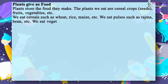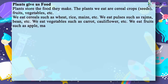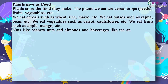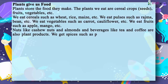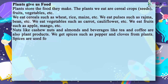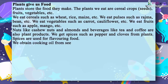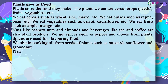We eat vegetables such as carrot, cauliflower, etc. We eat fruits such as apple, mango, etc. Nuts like cashew nuts and almonds, and beverages like tea and coffee are also plant products. We get spices such as pepper and cloves from plants. Spices are used for flavouring food. We obtain cooking oil from seeds of plants such as mustard, sunflower and groundnut.